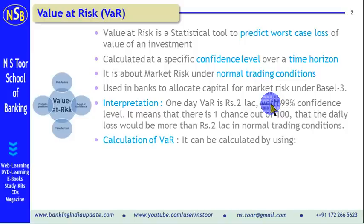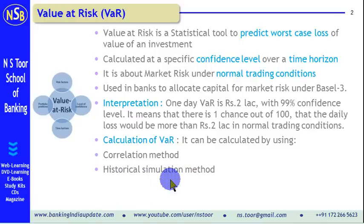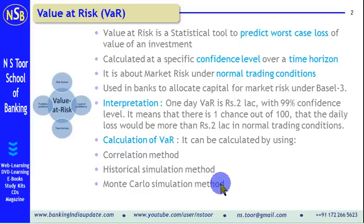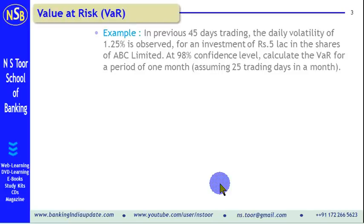How do we calculate Value at Risk? There are various models to calculate Value at Risk. These models are the Correlation Method, the Historical Simulation Method, and the Monte Carlo Simulation Method. In this lecture, we shall make use of the Correlation Method to calculate Value at Risk.